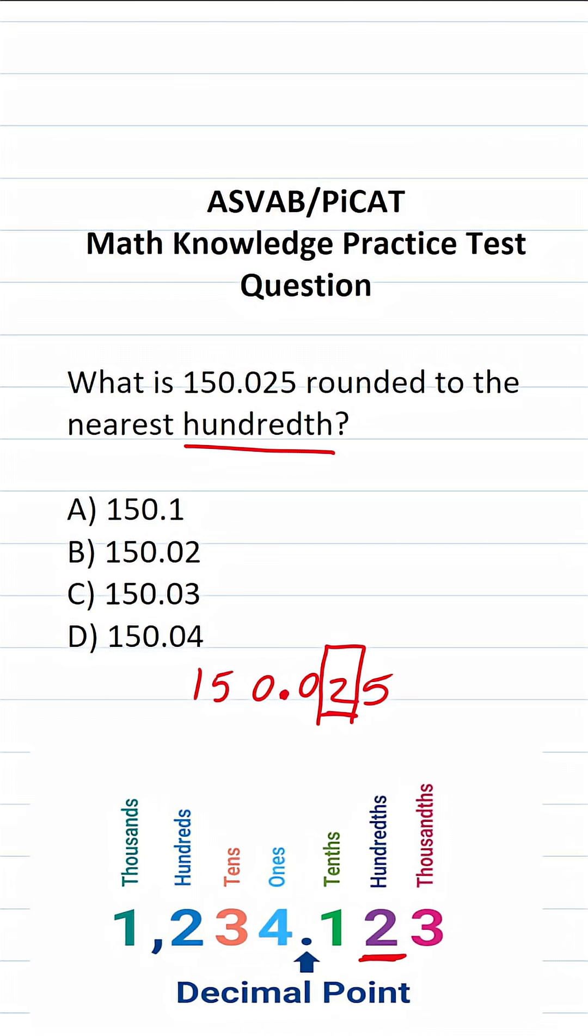So we're going to be rounding this two. In order to determine how to round it, we're going to look to the number that's to the right of the two. If it's four or less, we're going to keep the number the same. If it's five or greater, we're going to round up.